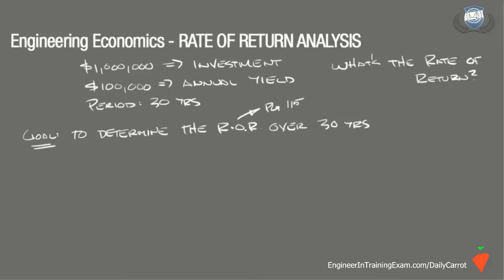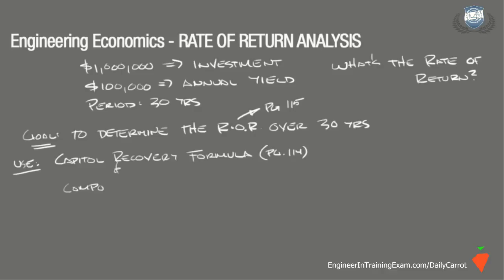We can determine the rate of return in one of two ways: either by using the capital recovery formula found in the table on page 114 of the NCEES Supplied Reference Handbook, or by using the functional notation version of the equation and referencing the compound interest table starting on page 116. As engineering economic problems get more complicated, it is best to get comfortable using the functional notation version of the equations and referencing the compound interest tables, as it will lead to a much more efficient use of your time.